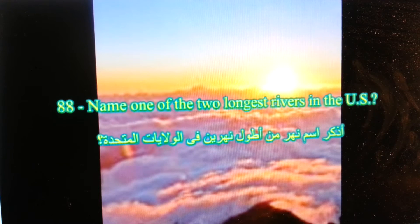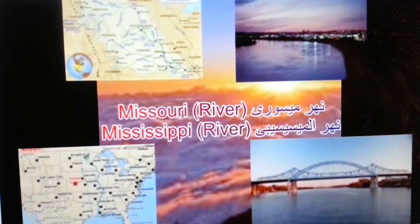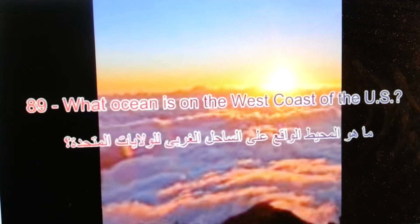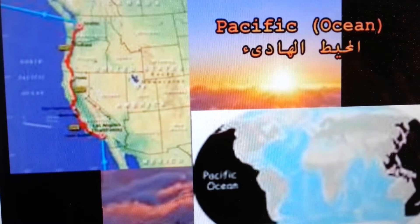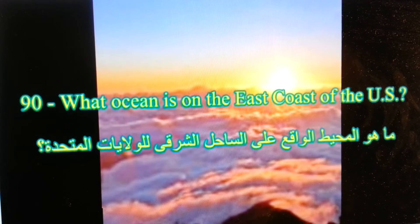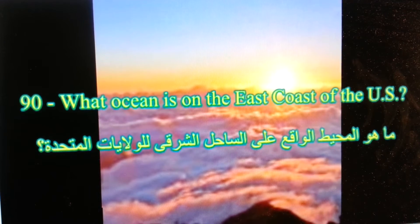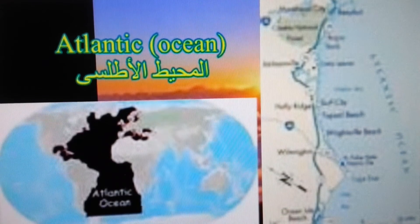Name one of the two longest rivers in the United States. What ocean is on the west coast of the United States? Pacific Ocean. What ocean is on the east coast of the United States? Atlantic Ocean.